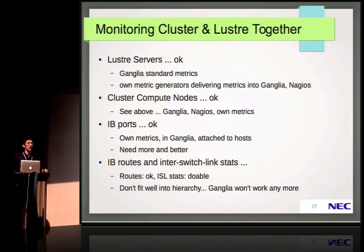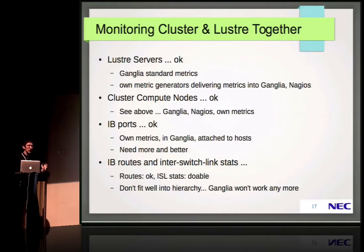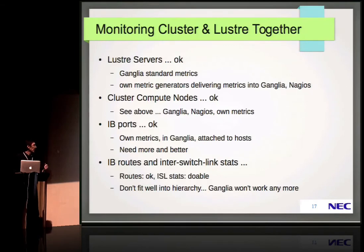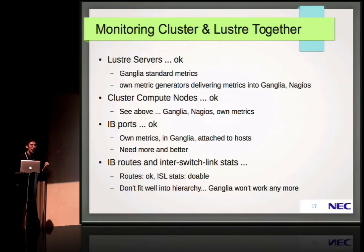Now to the other topic. The other topic is bringing together cluster and Lustre metrics. To some extent the previous tool was already doing something like that, but now we're looking at the classical metrics. We have Lustre servers organized in a file server cluster, and in our setup we have Ganglia configured in the Lustre cluster, giving us a set of standard metrics for the servers.